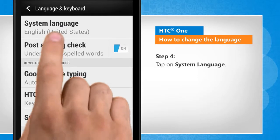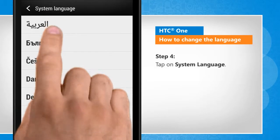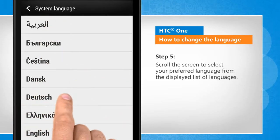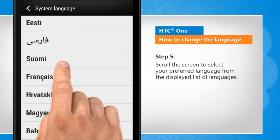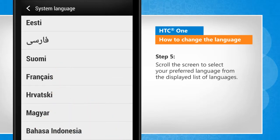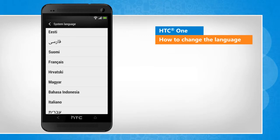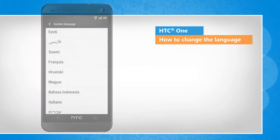Tap on System Language. Scroll the screen to select your preferred language from the displayed list of languages. That wasn't hard at all! Thanks for watching!